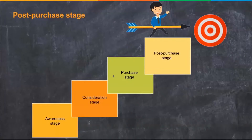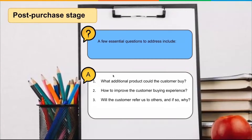After the purchase comes the post-purchase stage. Essential questions here: What additional product could my customer buy? What can I sell them next — without being too pushy? If they buy a coat, a hat or gloves could complement that purchase. Think about how to complement the customer's purchase and how to improve the buying experience. Get somebody to offer a review — if they give you three and a half stars instead of five, that's great feedback you can learn from. And will the customer refer others? That's definitely something to address in the post-purchase stage.